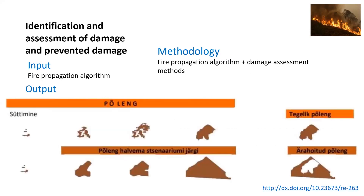The last prototype from the fire work package is identification and assessment of damage and prevented damage. The input is the output of the previous prototype, the fire propagation algorithm. Damage assessment methods are developed here. We can see how prevented damage is assessed — the figures are in Estonian, but the upper row shows the area of the real burning and the lower row shows the imagined area of burning without extinguishing the fire. So we can subtract the real burning area from the imagined burning area to result in prevented damage.